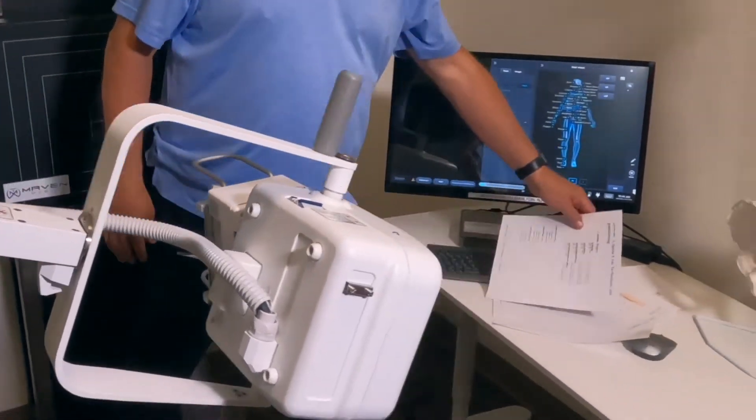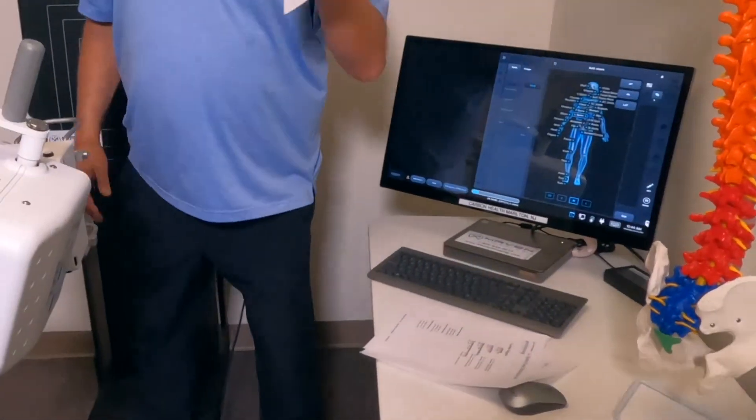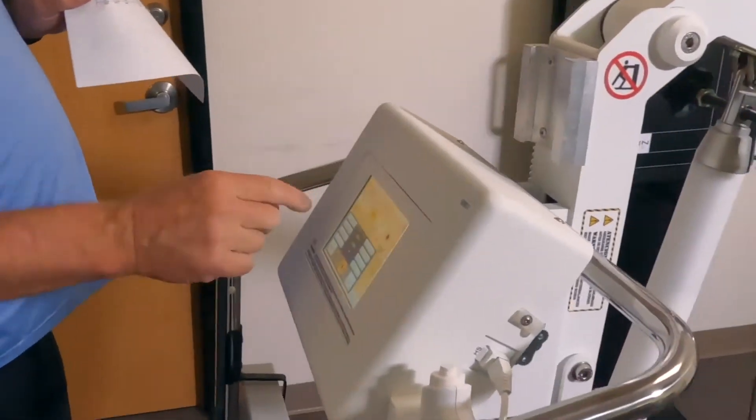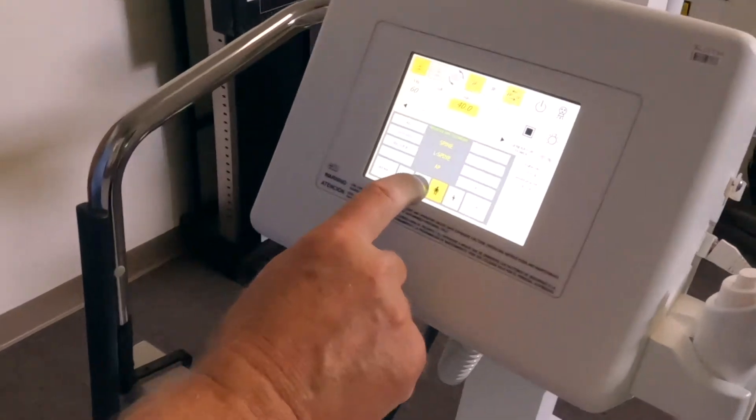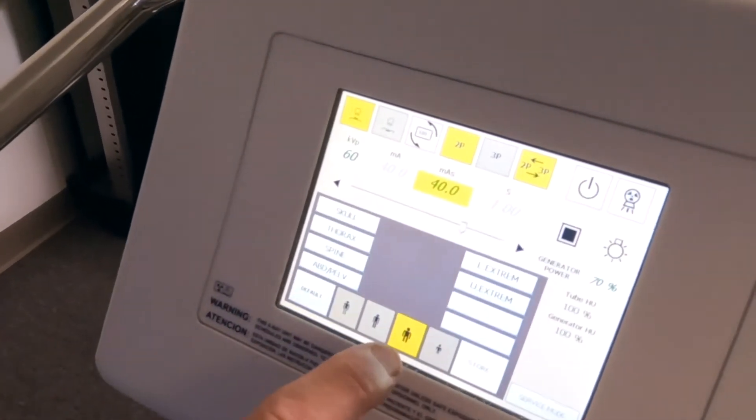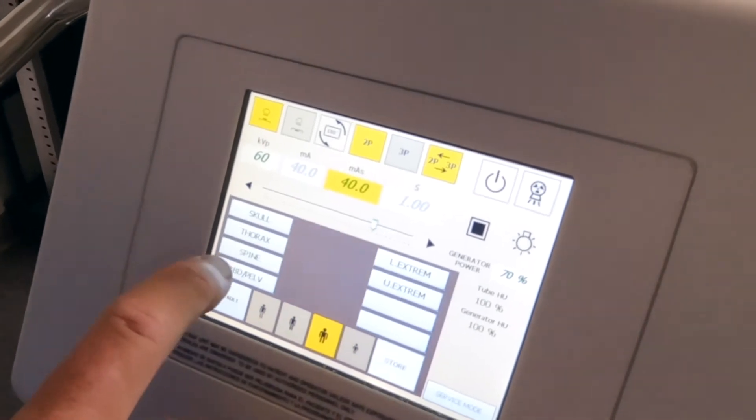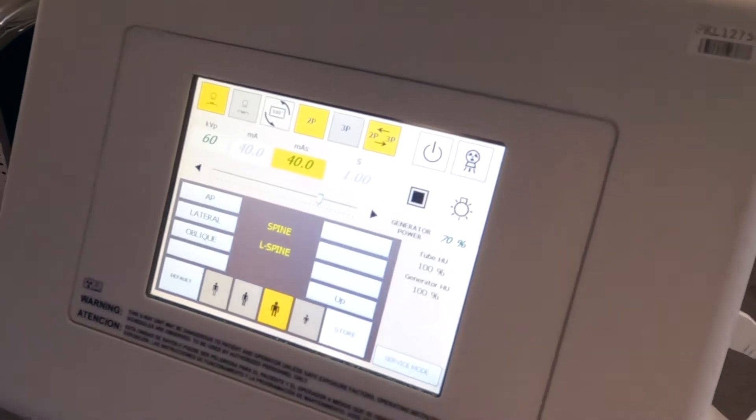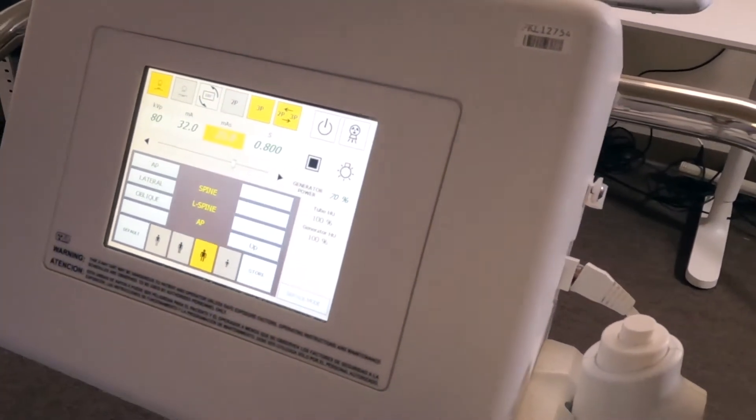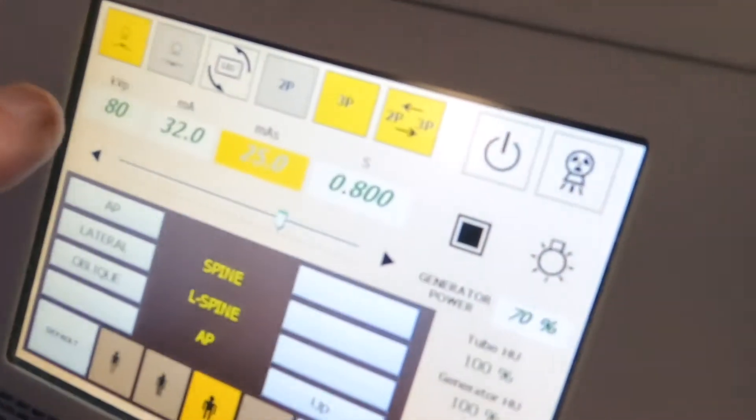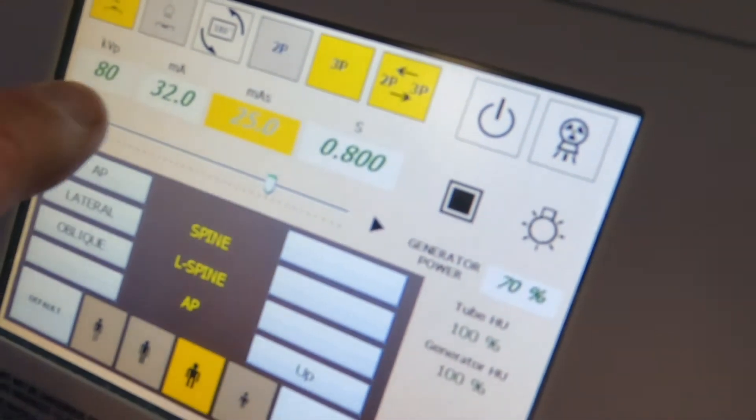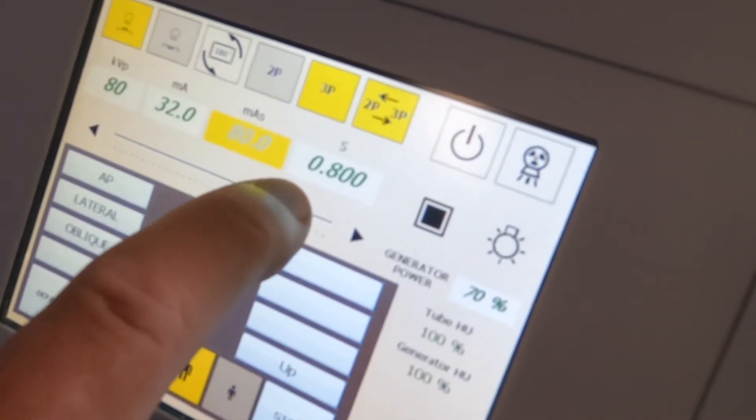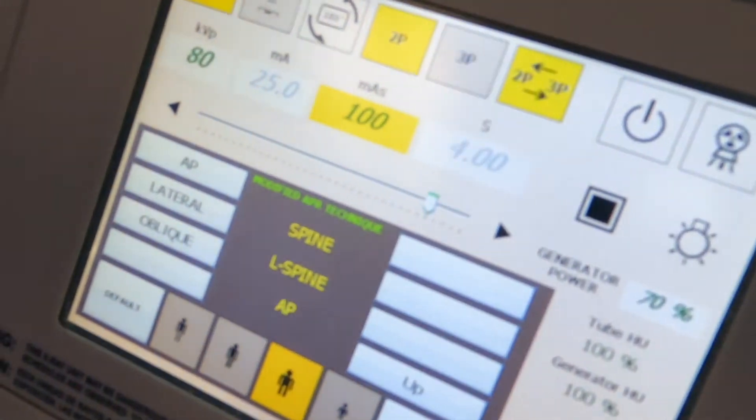The next thing is we have a technique chart. We're going to do a new shot, select the large focal point because I'm over 250 pounds. We're going to hit L-spine and then AP. As you see, we have KVP set at 80.